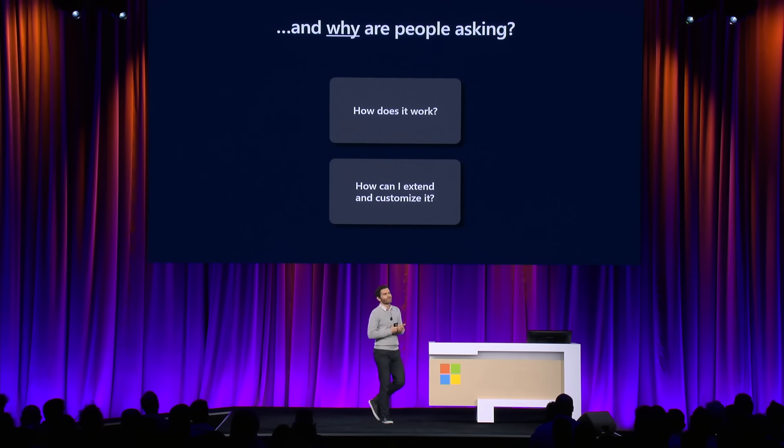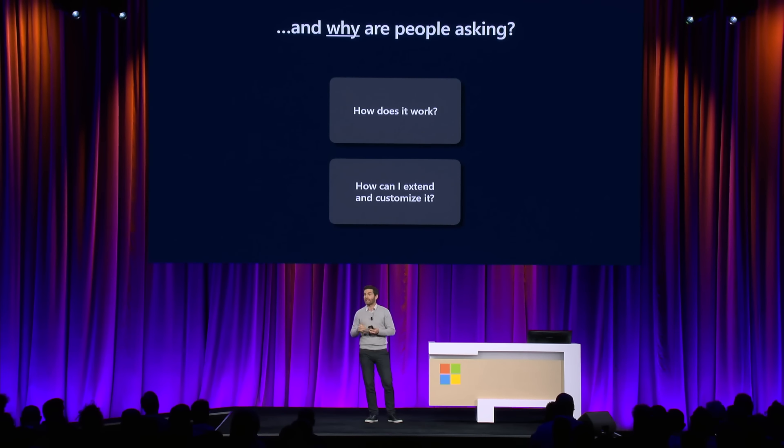We have talked about Copilot as being a Copilot that is with you through your entire life at work — and we mean that. But we also realize that people's work isn't only contained in the Microsoft Graph. So how do we connect it to those other services and extend it to make all of that available within Copilot? When I'm talking to customers and they ask how does it work or how do I extend it, I really want to understand why they're asking — are they coming from a place of skepticism, or are they just curious? Being able to answer that 'why' has helped set me up for success when going into the details, and I hope to help you on that journey as well.